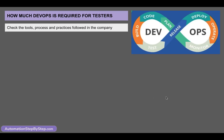To start with, you have to understand the process, the practices, and the tools used by the company or the project. Different companies and different projects may implement DevOps in different ways. So you first have to understand the process, then what are the practices they follow for DevOps, and what are the tools being used.